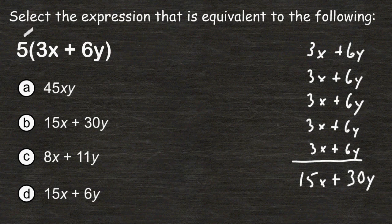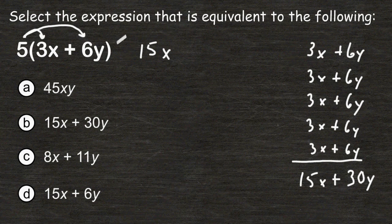You can use the distributive property to multiply this number on the outside by each term on the inside of parentheses. So 5 times 3x is simply 15x and 5 times 6y is 30y.